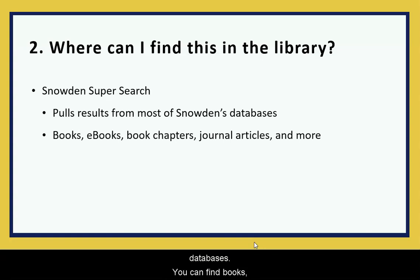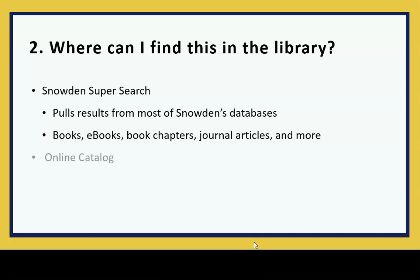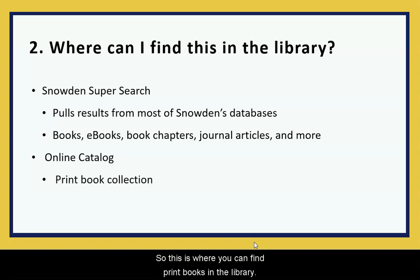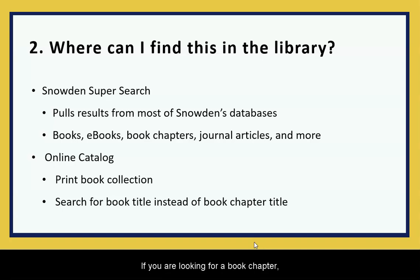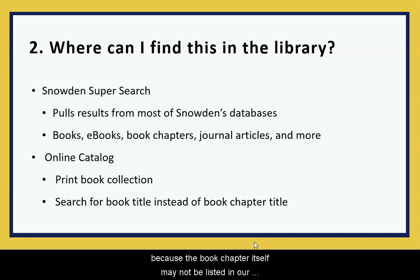You can find books, ebooks, book chapters, journal articles, and many more types of resources in SuperSearch. Another place you can turn to is the online catalog, where you can find print books in the library. If you are looking for a book chapter, you'll probably want to search for the entire book, because the book chapter itself may not be listed in the catalog record.